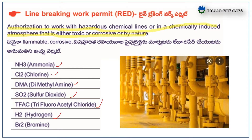Next, the line breaking work permit flowchart. The flowchart will guide the sequence and process of line breaking work permit usage. First, we have to assess the job — does the job involve exposure to hazardous chemicals? Then read the MSDS carefully before working with chemical lines, and check that the pipeline is cleared from hazardous chemicals.